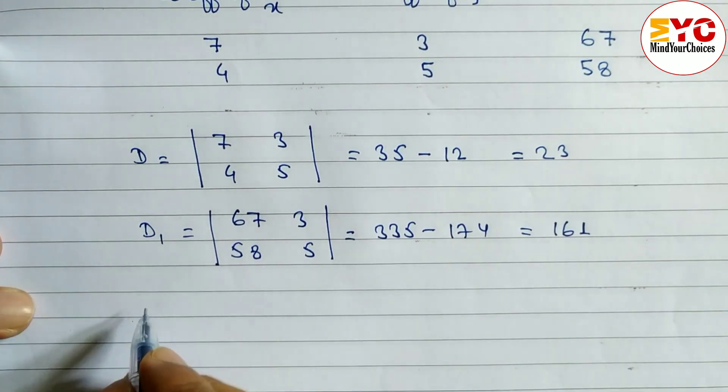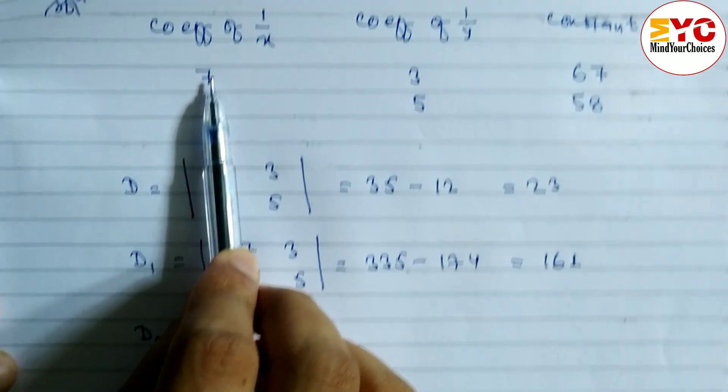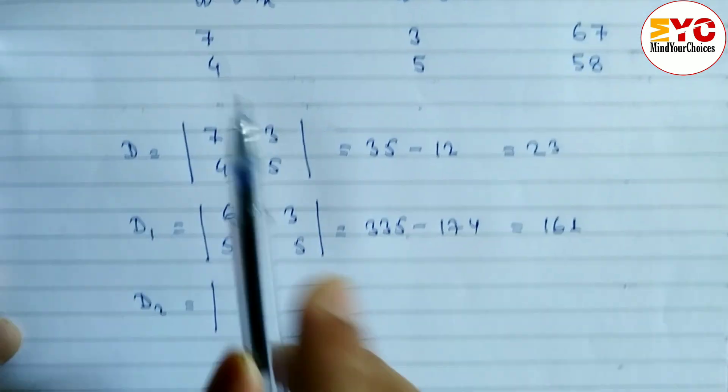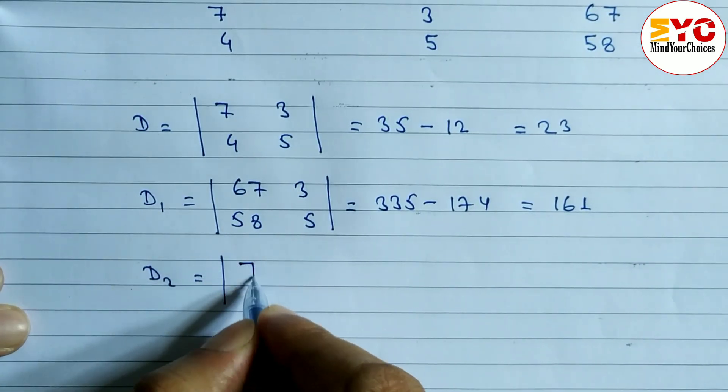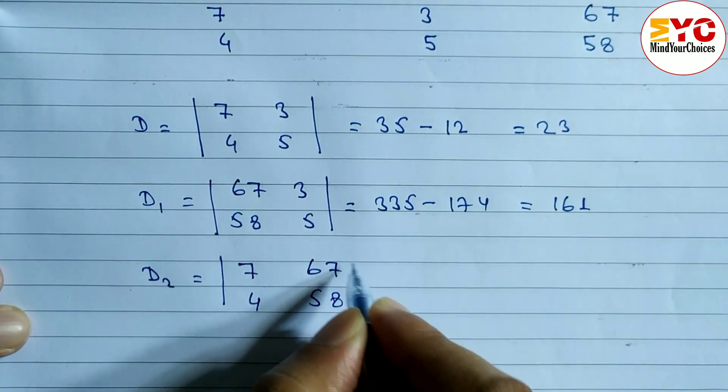Similarly we have to find out d2. To find out d2 we have to take coefficient of 1 by x and constant number. This two we have to take. So here we have to write down 7, 4 and 67, 58. Let's multiply this two.